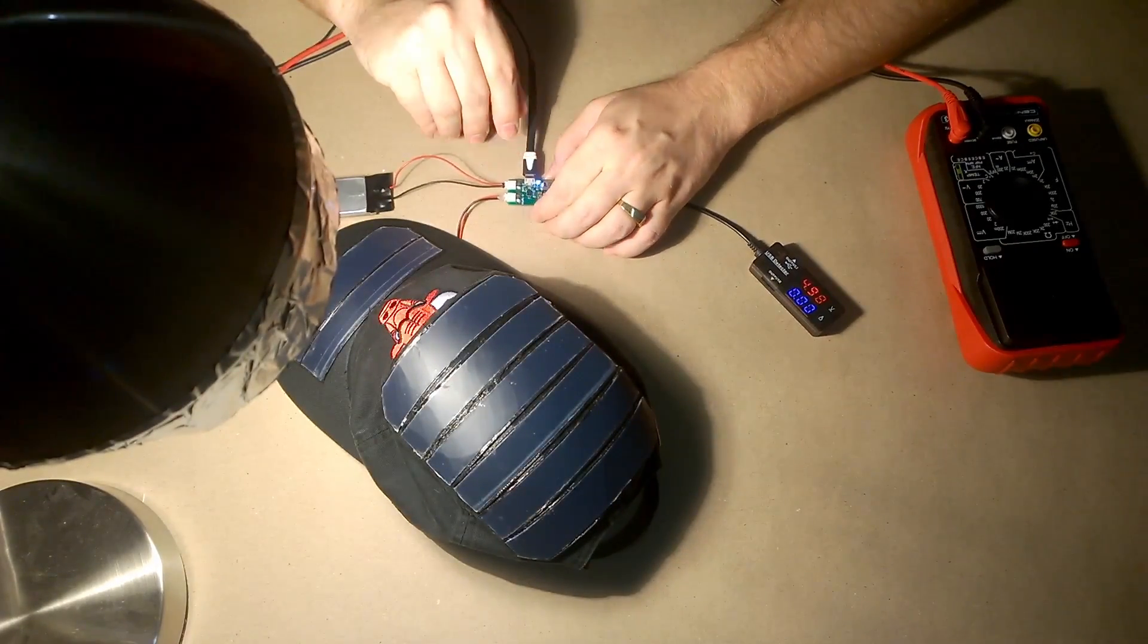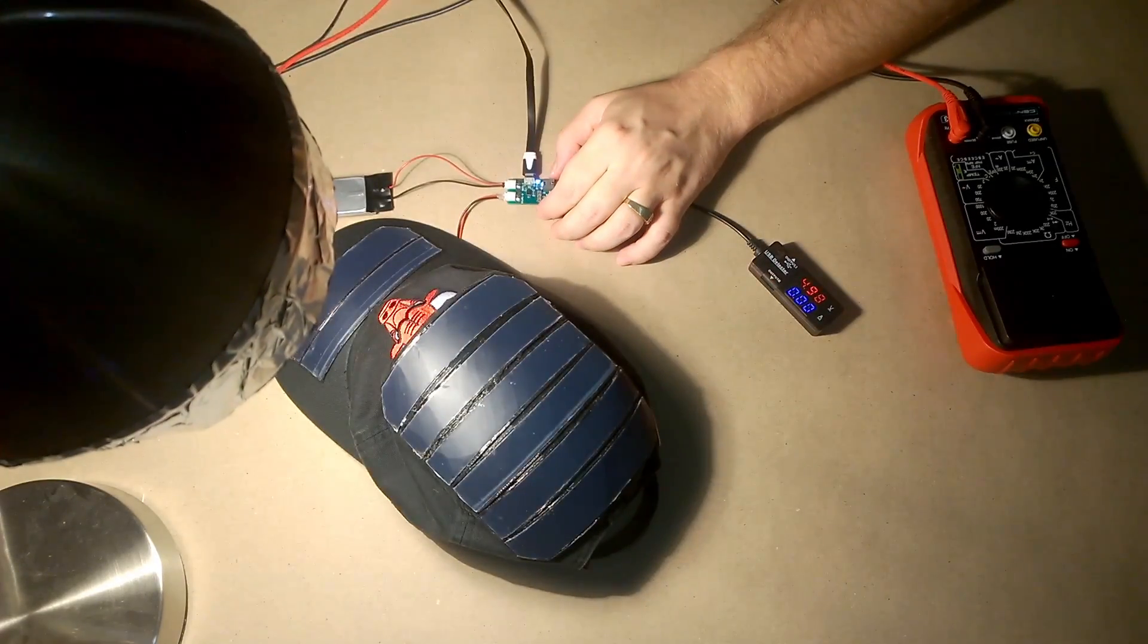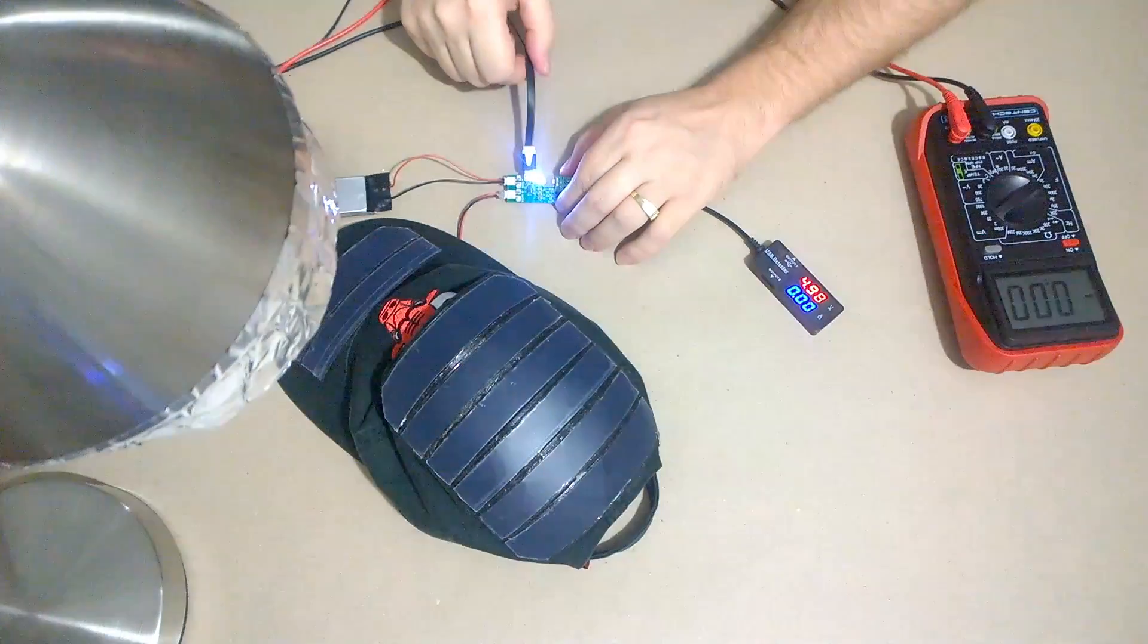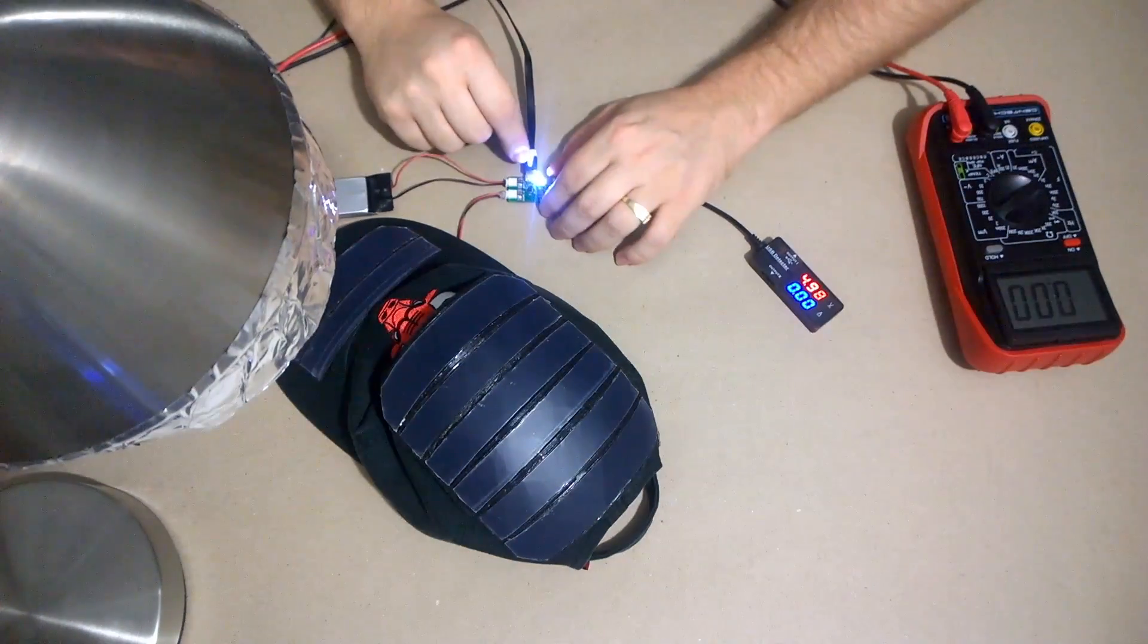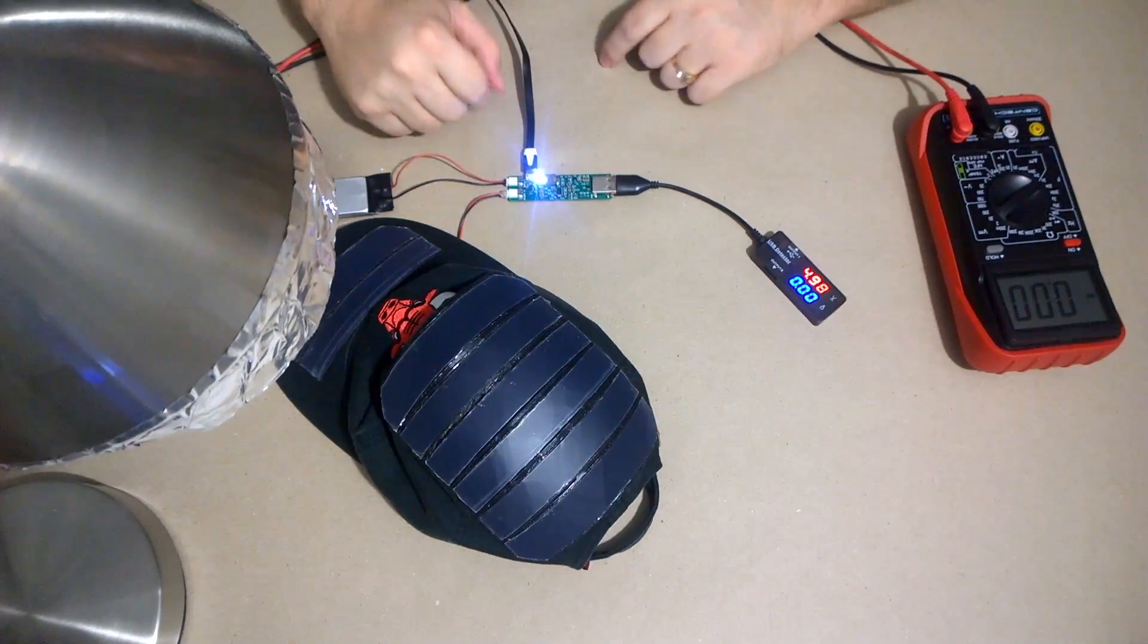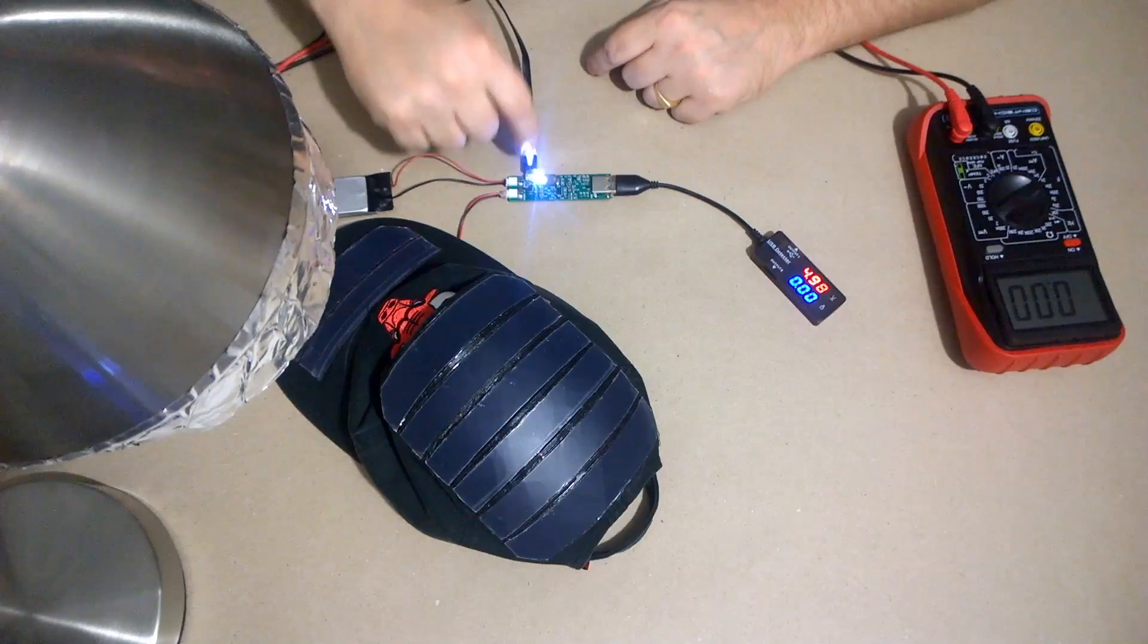Alright! I think it's working. So there's... The light indicates that, yes, it's receiving a charge. I'm gonna turn off my artificial solar source so that you can see it. And, yes! It is charging! Excellent!